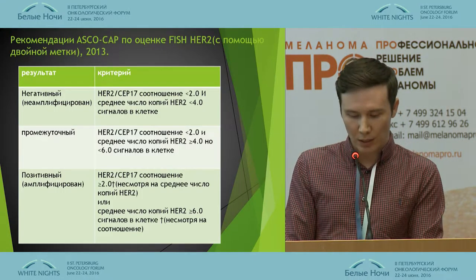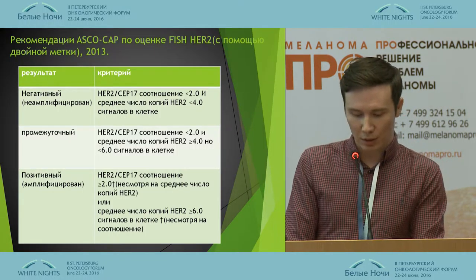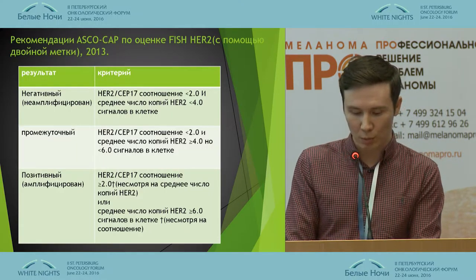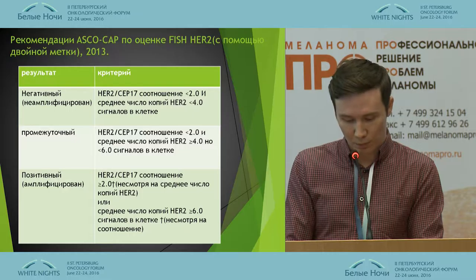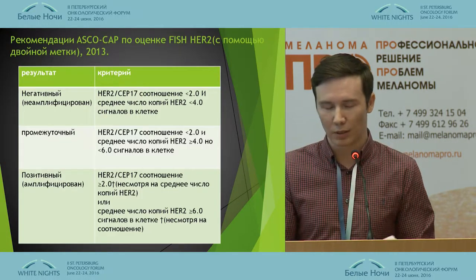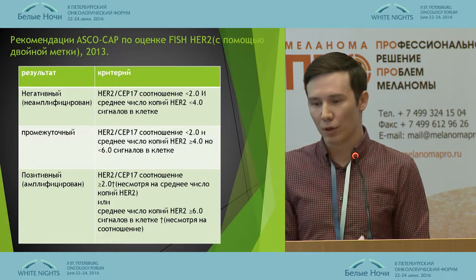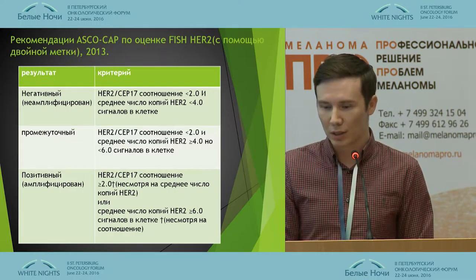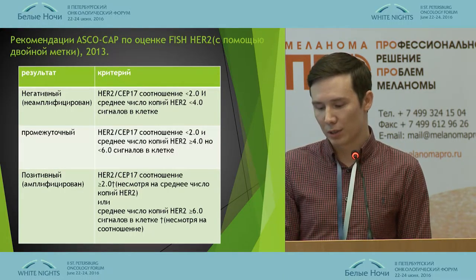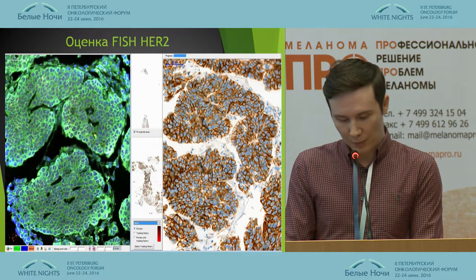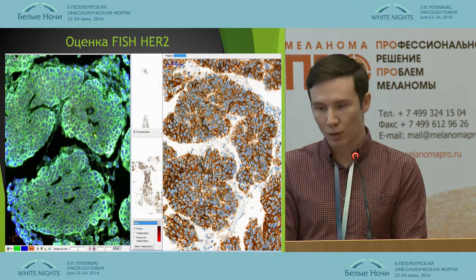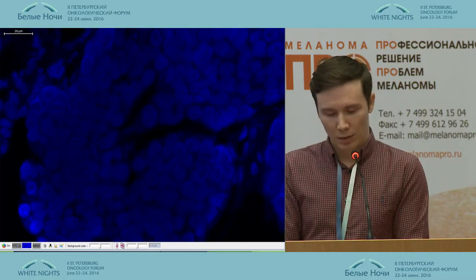According to the ASCO/CAP recommendations for evaluation of FISH HER2 with a dual marker, the criteria are: a HER2/CEP17 ratio less than 2.0 or fewer than four signals per cell is negative. An equivocal result has a ratio less than 2.0, and a positive result has a HER2/CEP17 ratio over 2.0. We look at the invasive carcinoma zone and scan it in fluorescent mode.